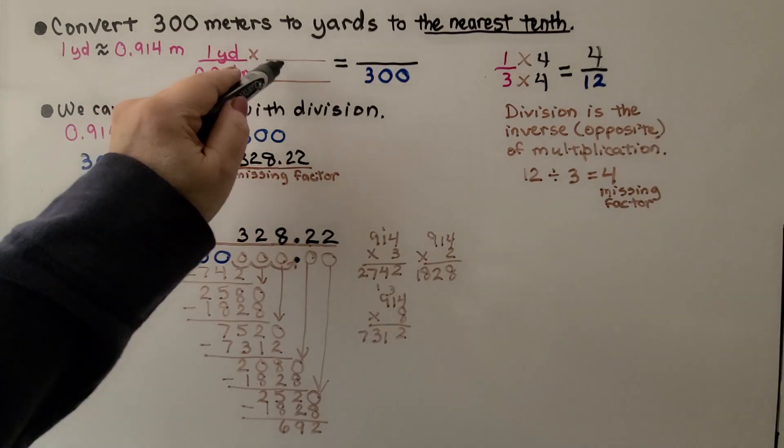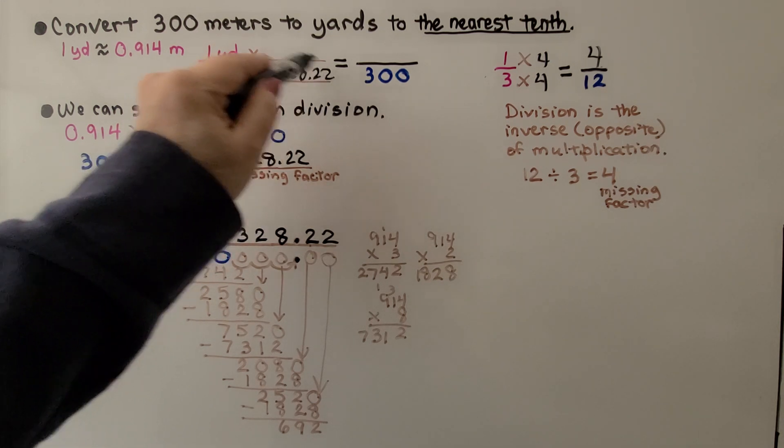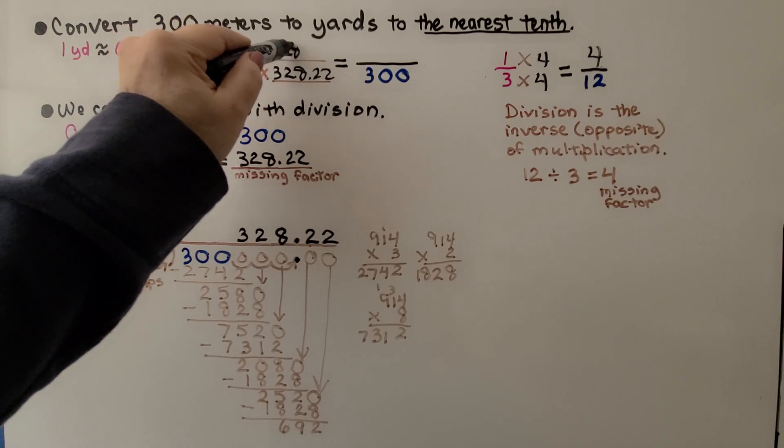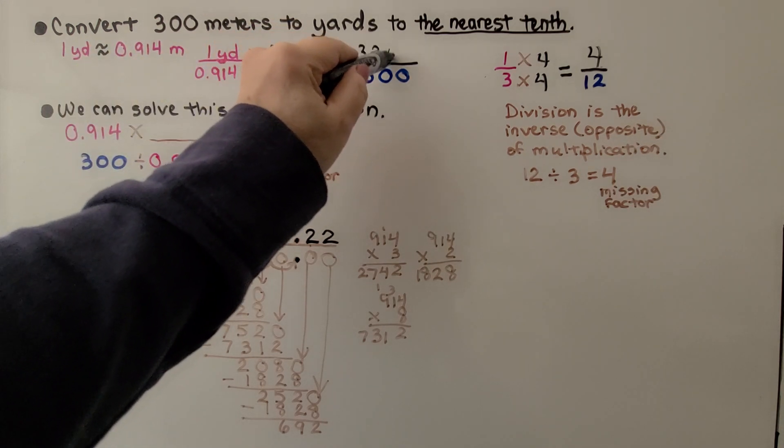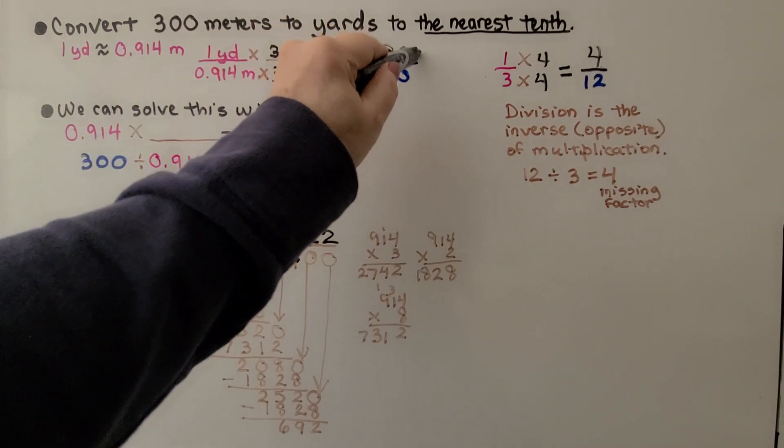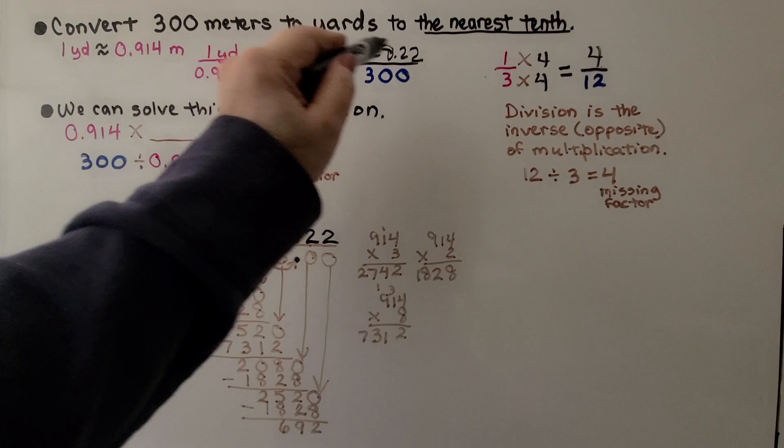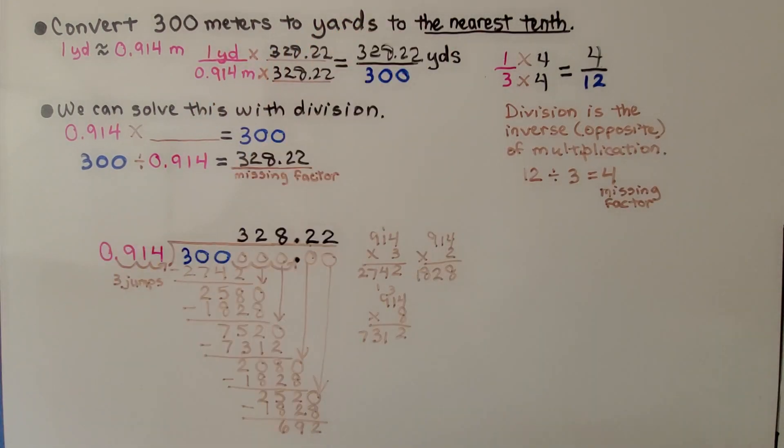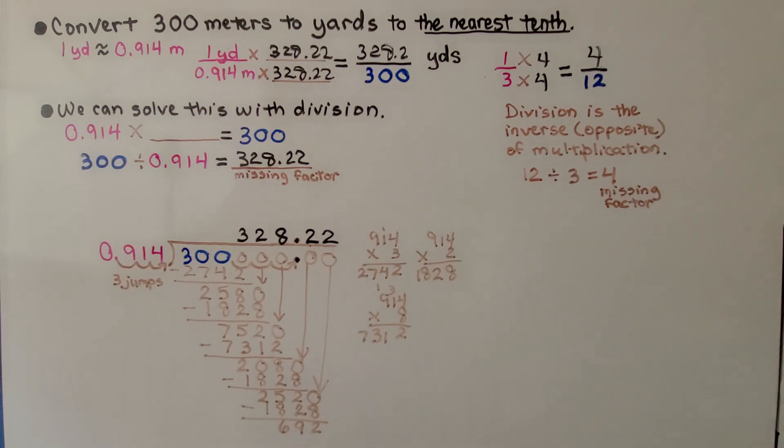328.22. That means this is going to be multiplied by 328.22, which means this needs to be multiplied by the same thing. 328.22. And it's times one, so we know that's 328.22. So we've converted the meters to yards. We know it's 328.22 yards. And it wants it to the nearest tenth, so we can take this two away and just say 328.2 yards.